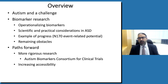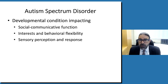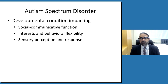Autism — I really don't need to tell this group much about it. Broadly, we know that a few different areas of development are affected: social communication, interest and behavioral flexibility, and sensory perception and response. I want to highlight a few things that are really relevant about autism when thinking about biomarker development.